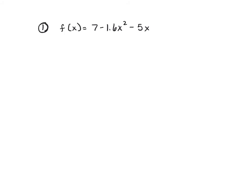Let's look at another example. We check exponents — all fine. For standard form, x squared goes first, then negative five x (exponent of one), then seven. Standard form is written. The degree is two, which we can see right there. When the degree is two we call it quadratic, and the lead coefficient is negative 1.6.